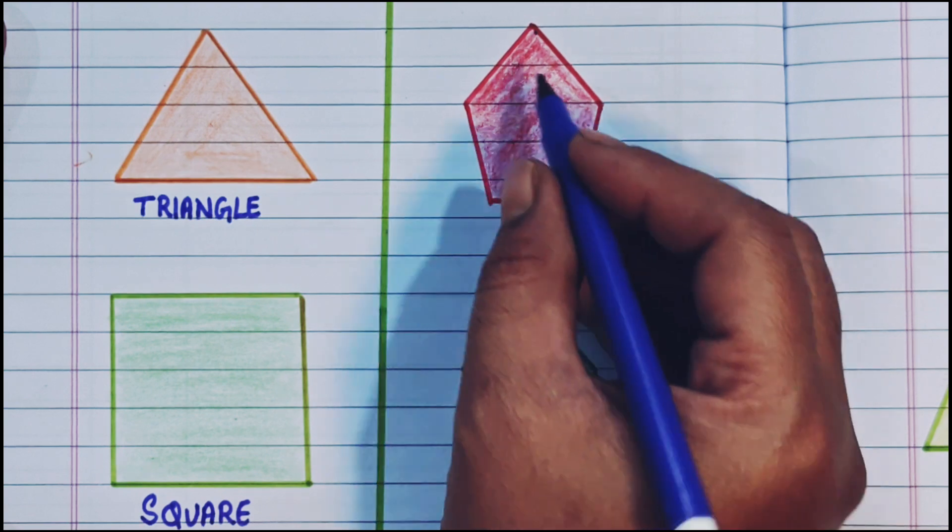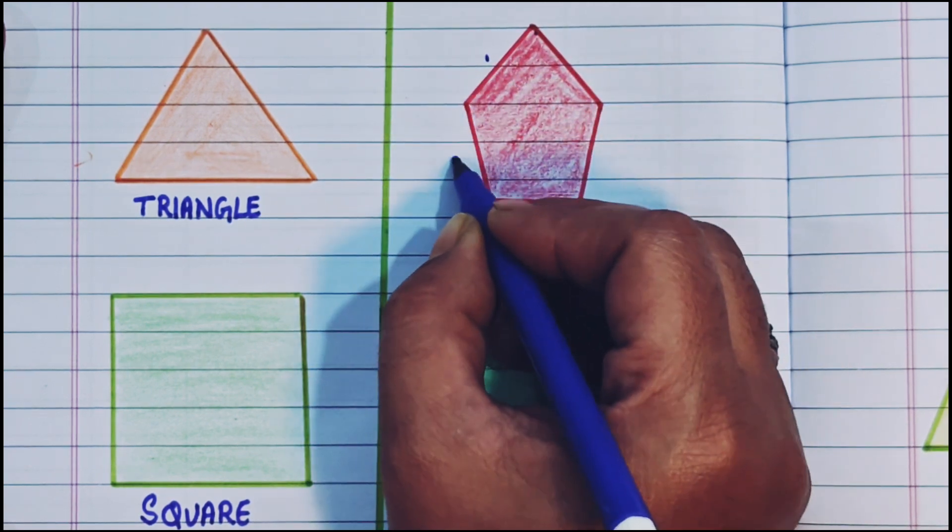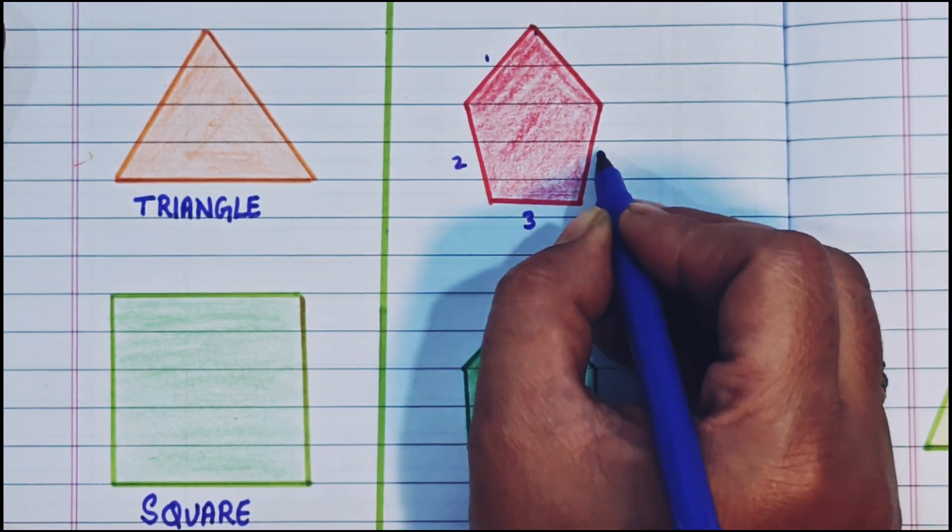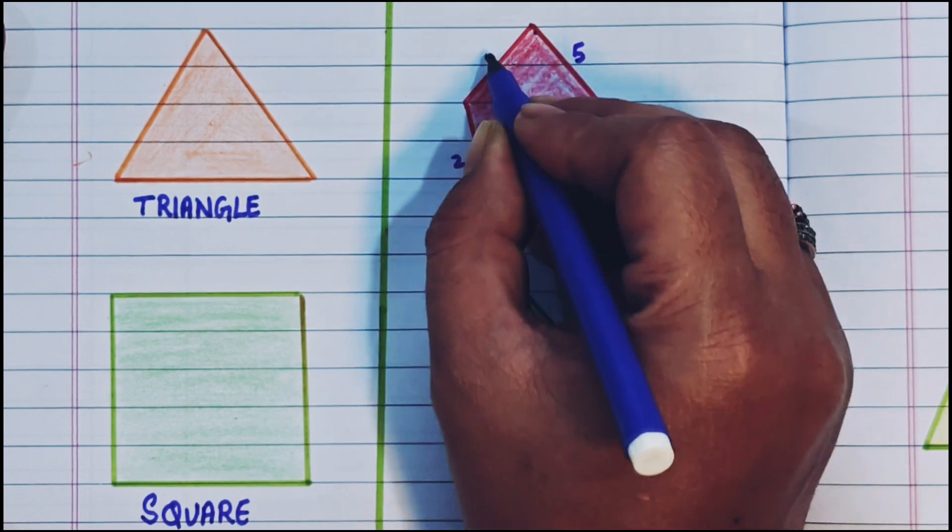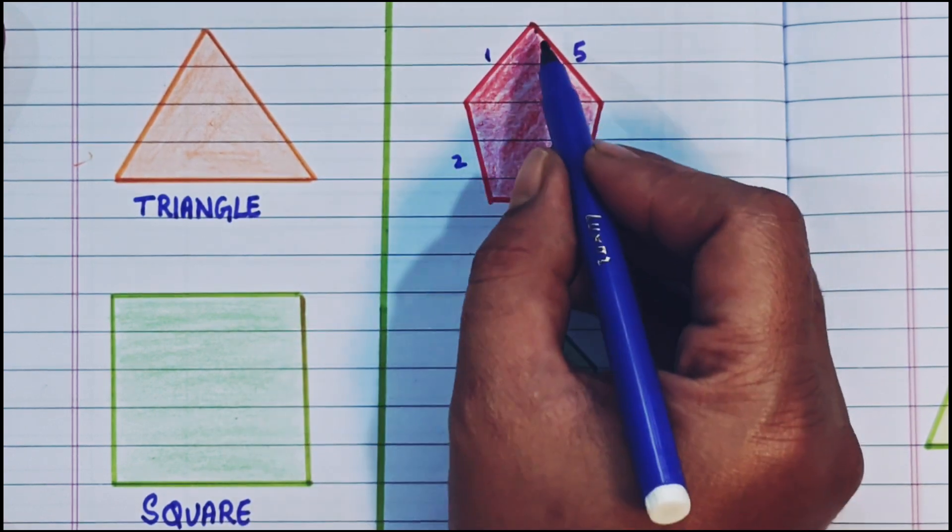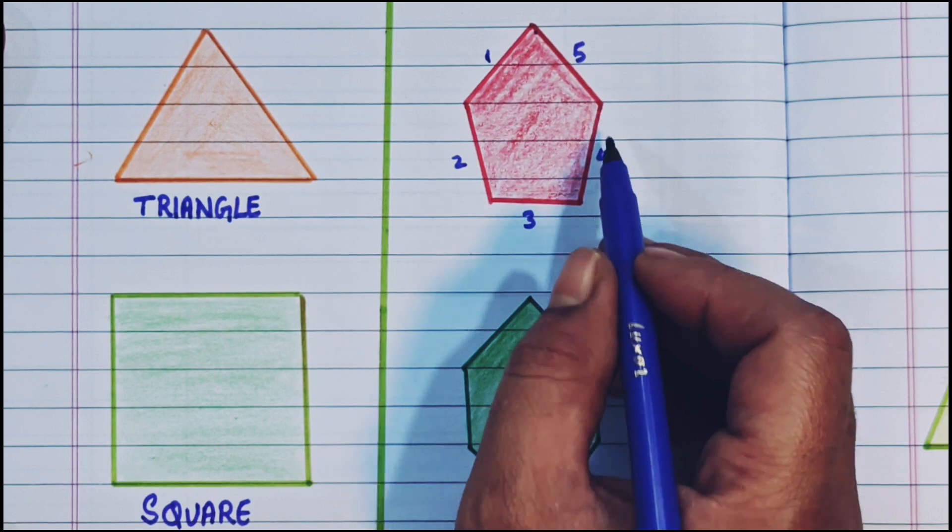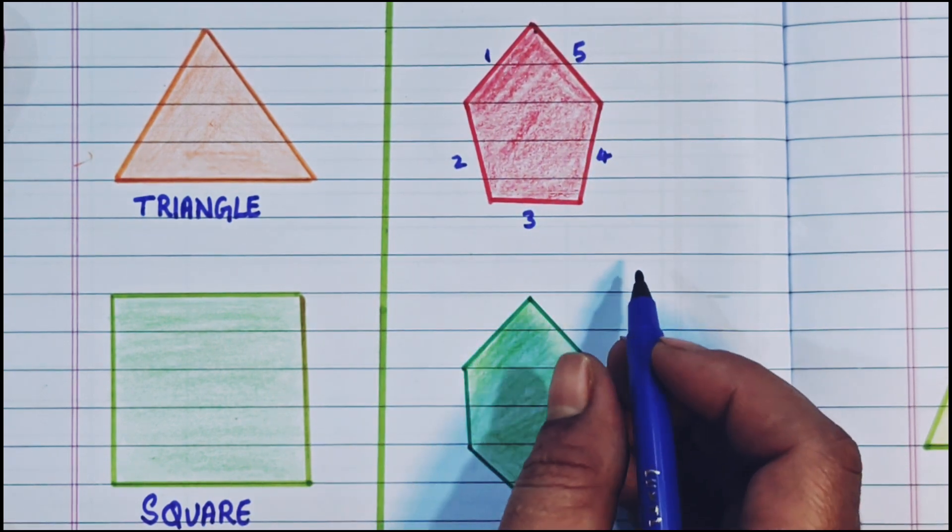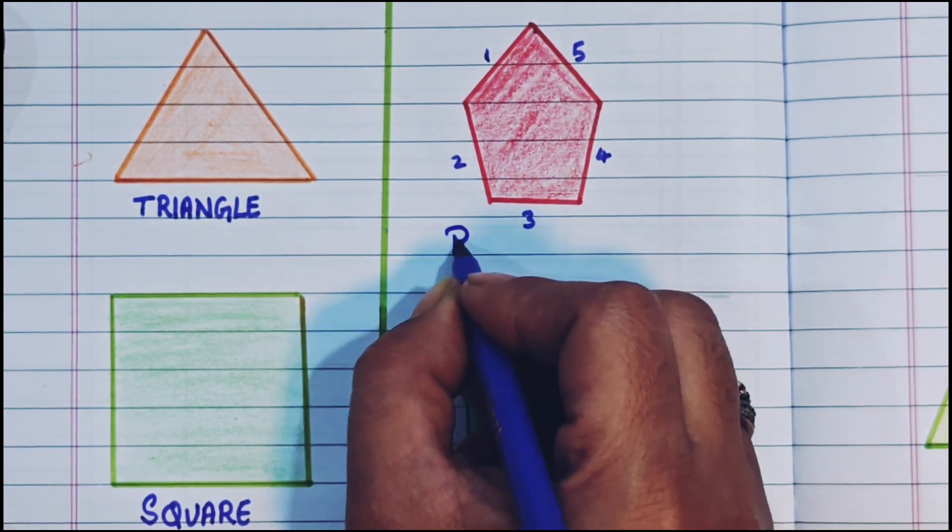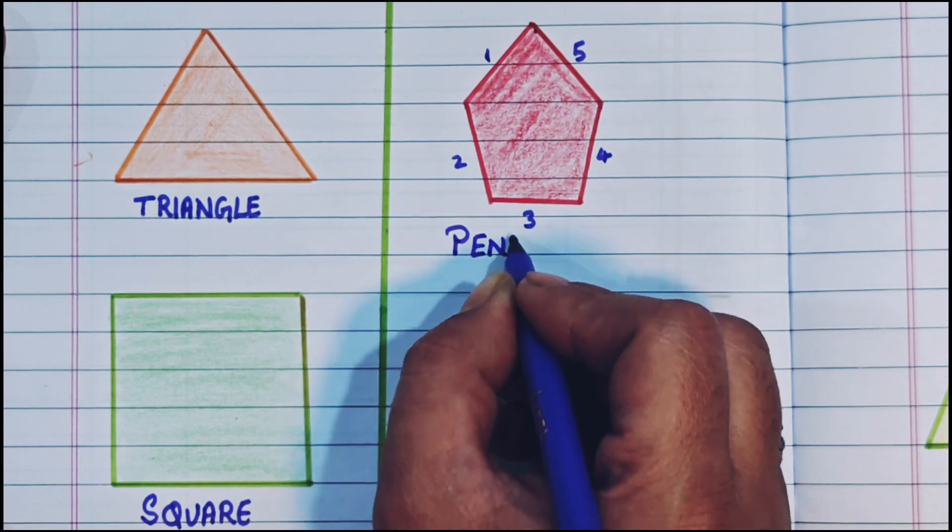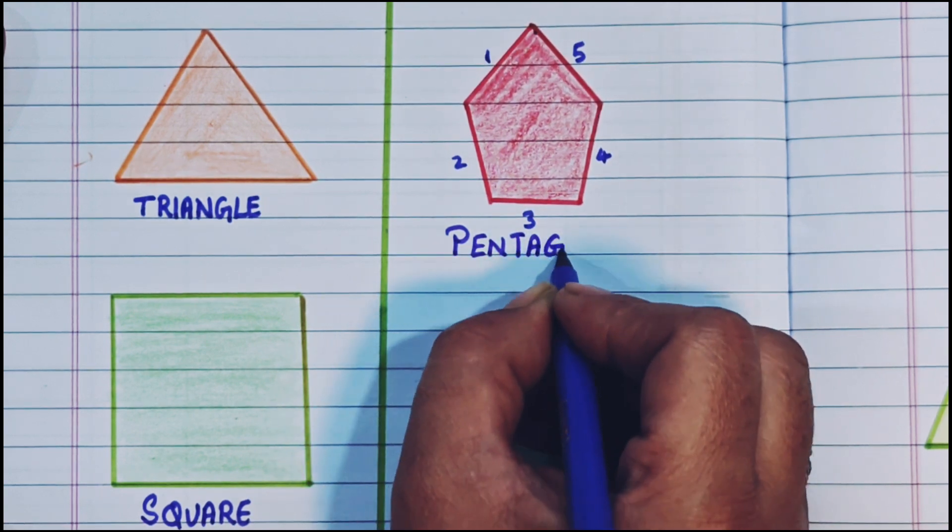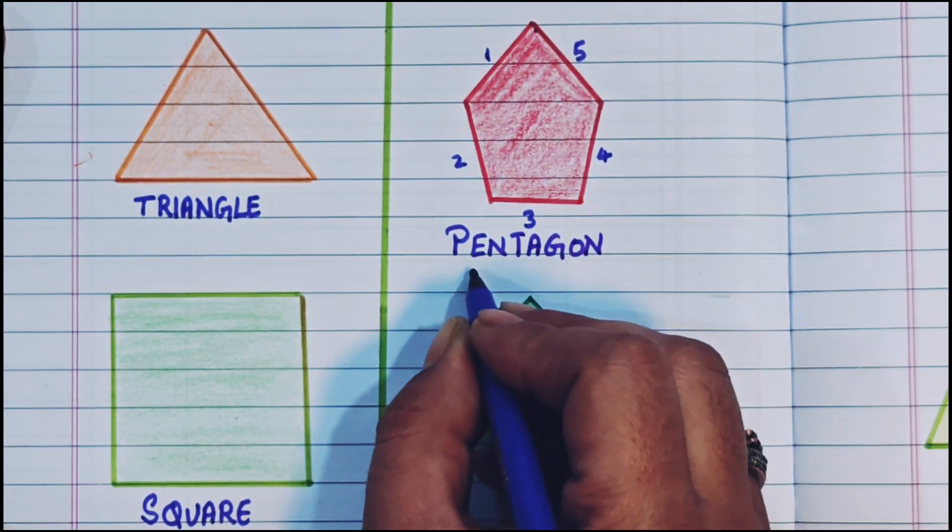This shape has 5 sides. See, 1, 2, 3, 4, and 5. So it has 5 sides and 5 corners: 1, 2, 3, 4, and 5. So this is a pentagon. P-E-N-T-A-G-O-N. Pentagon.